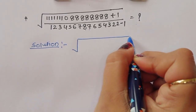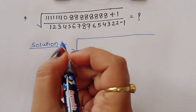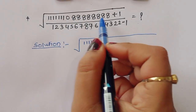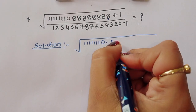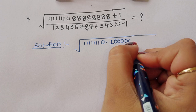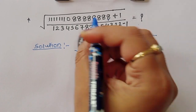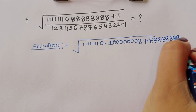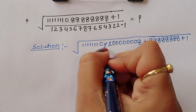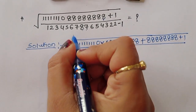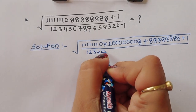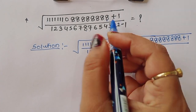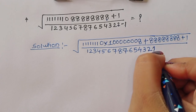So we can write this as square root of 7 times 1 followed by eight zeros, into 8 times 10^8, plus 8 times 10^8, plus 1. This is the multiplication, divided by the same number 12345678765432, which equals 1.